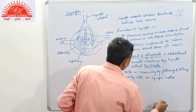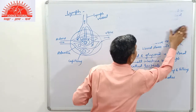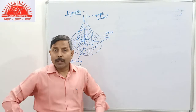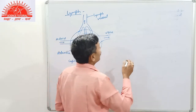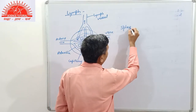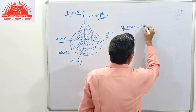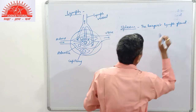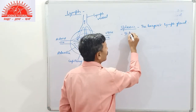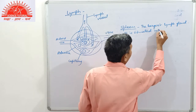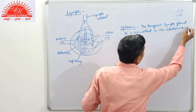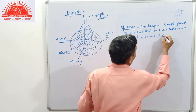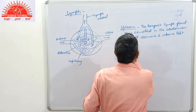When we suffer from injury or wounds, swelling of lymph nodes can be observed at the armpit, groin, and other parts. The spleen is the largest lymph gland. It is situated in the abdominal cavity, behind the stomach and above the left kidney.